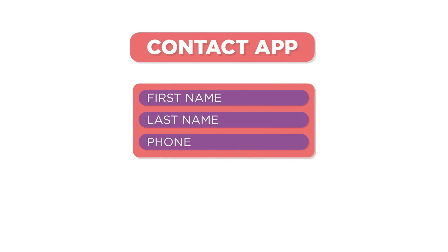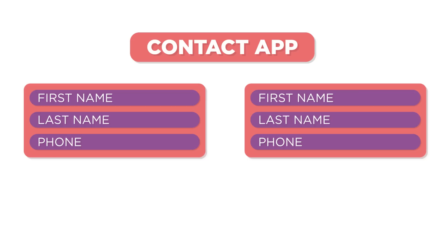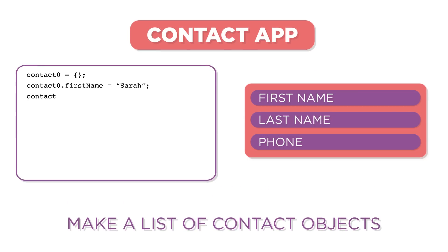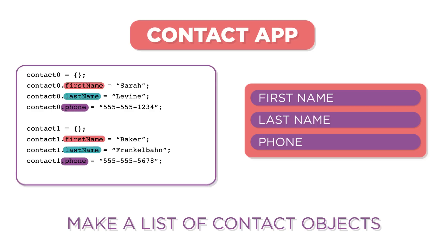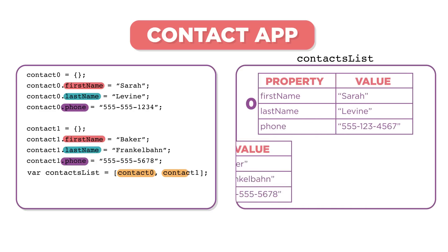Let's go back to our contact example from the beginning. Since we're trying to build a contact list of multiple people, each with related properties, we can make a list of contact objects. Here we're making two contact objects which both have the same related properties — name and phone number. We can then put them and any future friends in a contact list.